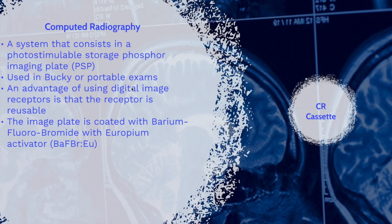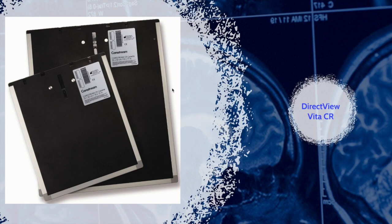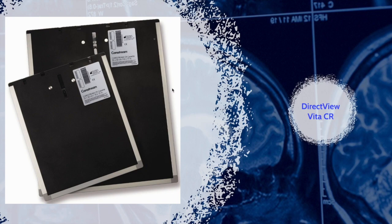The image plate is coated with barium fluorobromide with europium activator. Here is an image of the cassette, but instead of film, the cassette uses the PSP photo-stimulable storage phosphor imaging plate.